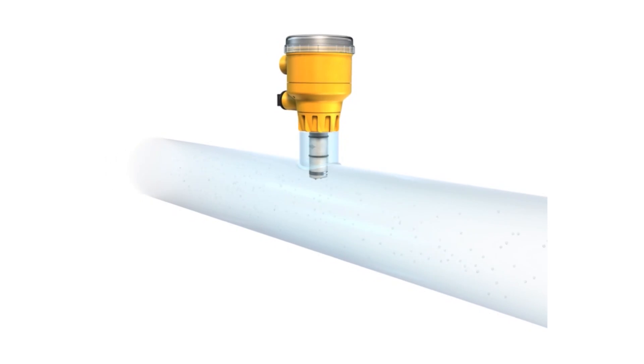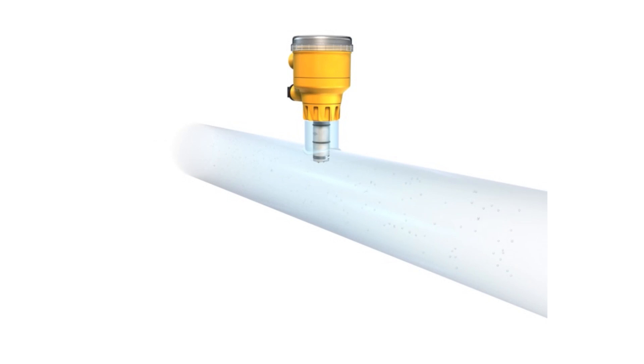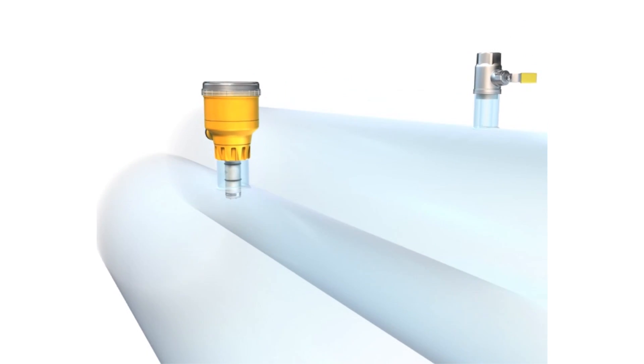Signet magmeters feature bidirectional flow and empty pipe detection and measure flow ranges from 0.15 to 33 feet per second. The 2551 is available for pipe sizes up to 12 inches. For large dimension pipes up to 48 inches,